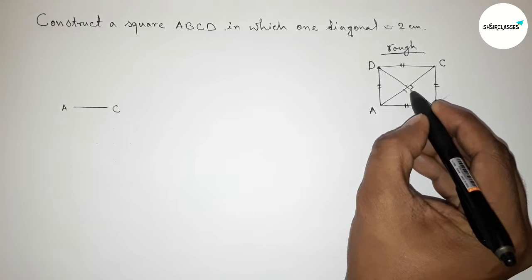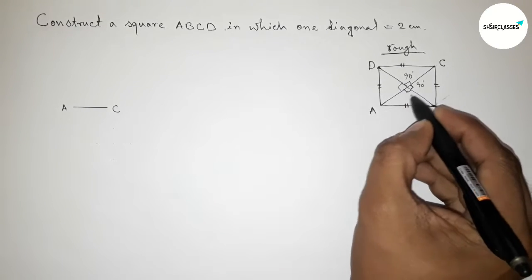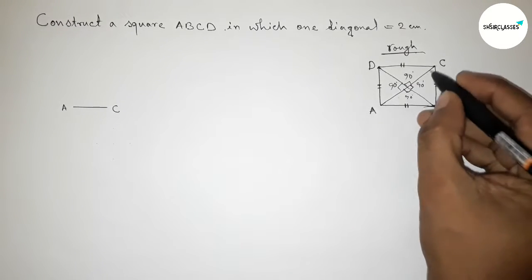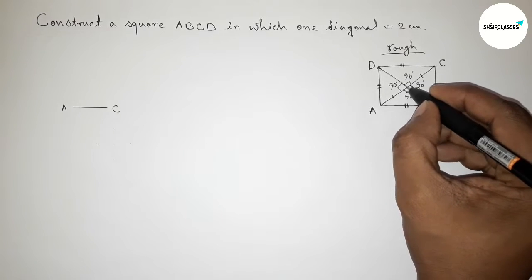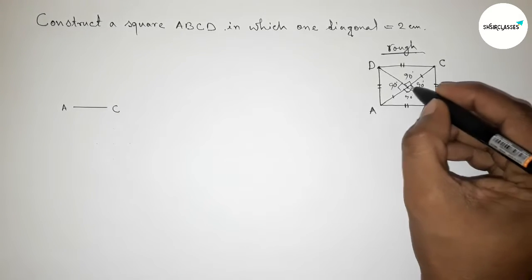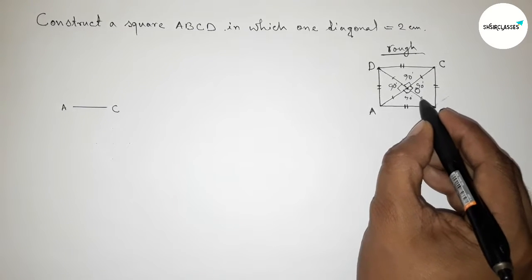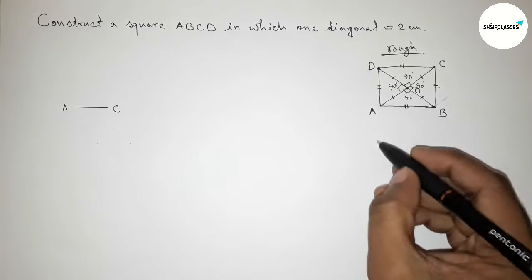Now we know that the diagonals of a square bisect perpendicularly to each other. Okay, so all the angles here are 90 degrees and this side and this side.